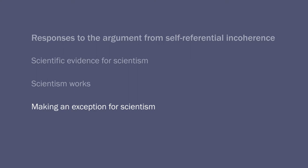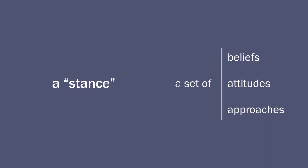So maybe the most promising reply is to treat scientism not as a claim or as a statement, but as a stance. The concept of a stance has been developed in some more detail by Bas van Fraassen, the Dutch-American philosopher of science, who has written extensively about empiricism. He claims that empiricism is a certain stance and not so much a thesis or a claim. A stance is a set of beliefs, a set of attitudes, a set of approaches, a way of doing certain things. So it's not merely a claim, but it's something broader and also something deeper than that.